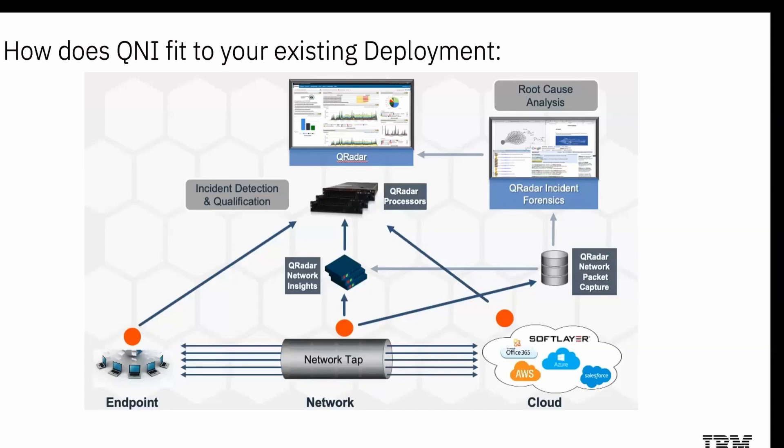Here is how QNI fits into your existing deployment. QNI collects flow data and fits into a QRadar deployment just like another flow collector, but where it stands out is the capability to perform deep packet inspections. It is a dedicated appliance that digs deep as per the configuration. All the analysis applies to the data collected by QNI, giving more context to the collected data. As you can see from the diagram, data on the network between different endpoints and cloud environments is captured through a network tap. This captured data is taken up by QRadar Network Insights and QRadar Network Packet Capture, which is connected to the QRadar deployment to help in incident detection and qualification.